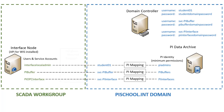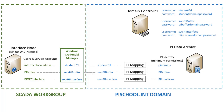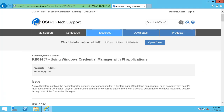The solution is Windows Credential Manager, which lets us store domain credentials on a workgroup node and link them to local accounts. This video goes through linking these accounts. In addition to setting up these links, we will verify connection information on the PI Data Archive for the user, buffer, and interface from the workgroup node to show that Credential Manager is working. Additional information can be found in KB 01457, "Using Windows Credential Manager with PI Applications."